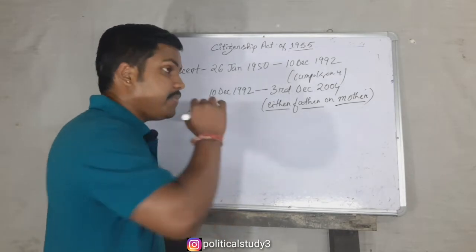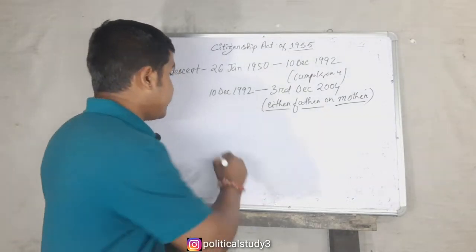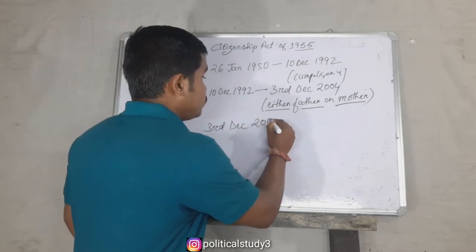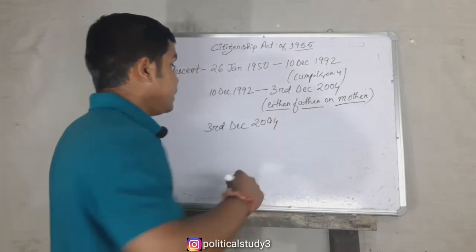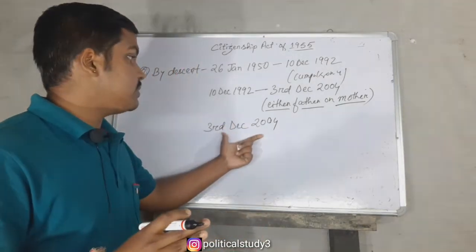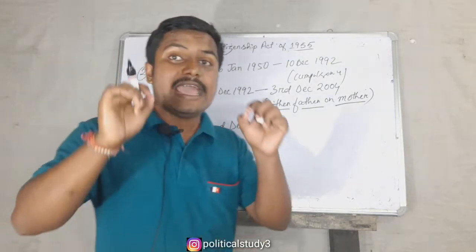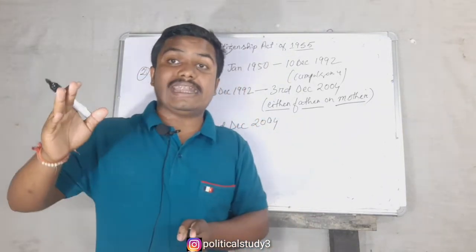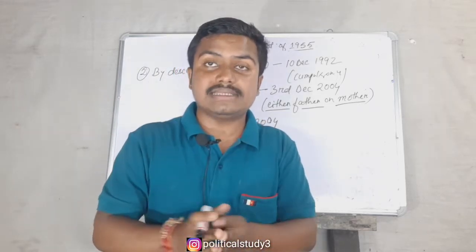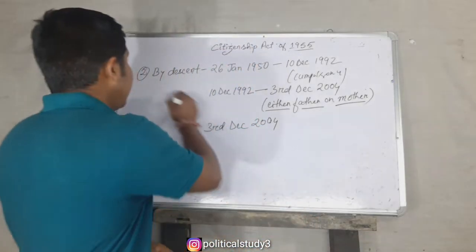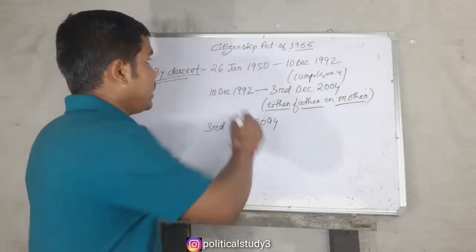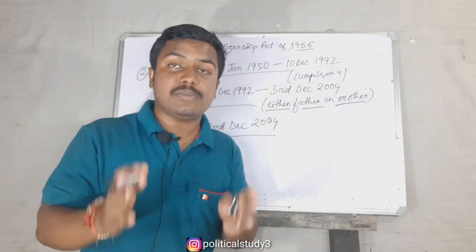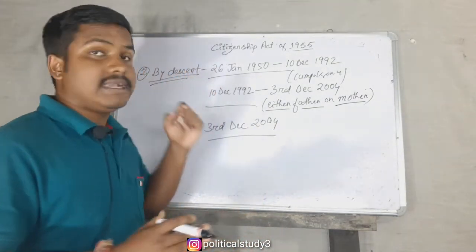The third date says that if a person is born outside India on or after 3rd December 2004, then he or she has to register within one year of birth at an Indian consulate. Then only he or she can acquire the citizenship of India by descent.